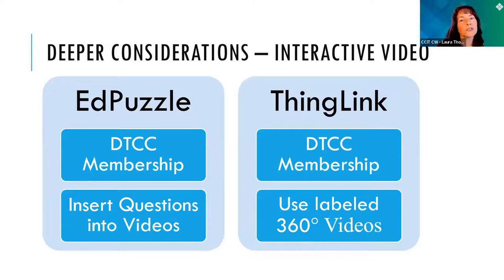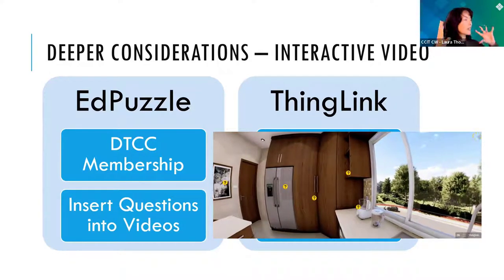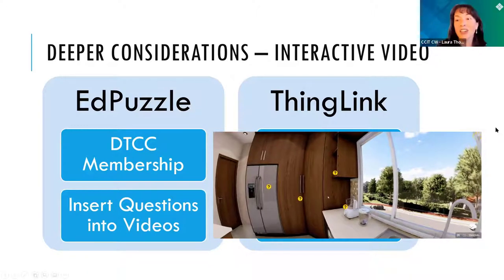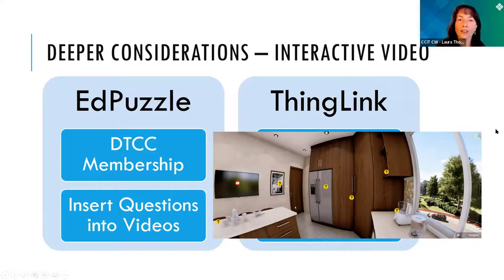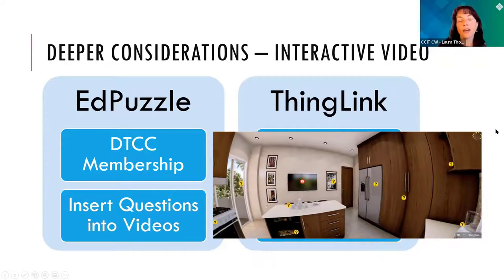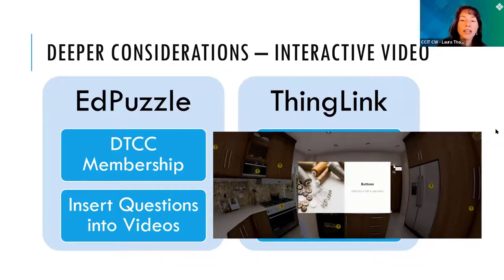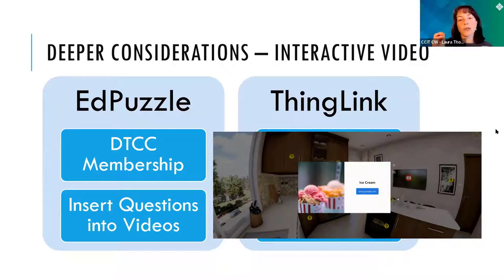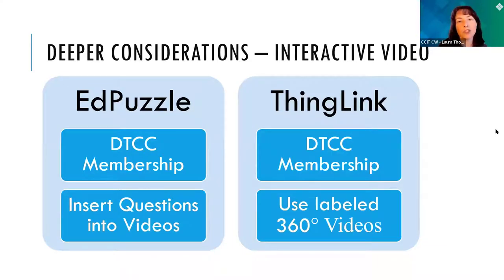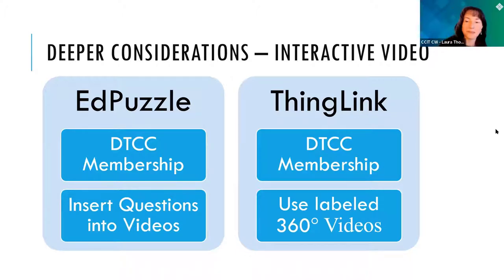One way to use ThingLink interactions is for 360-degree videos — it's just like you're in the situation, turning and looking around. Some instructors have created interactive 360-degree tours of a lab space, a medical room, an ambulance, or a kitchen, and added labels to explain what students are seeing. We have memberships to EdPuzzle and ThingLink, and have had several lunch-and-learns and coffee talks for both — EdPuzzle is currently the teach champions challenge.